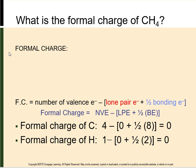The formal charge is the electrostatic charge that would reside on an atom in a molecule or polyatomic ion if all bonding electrons are shared equally between pairs of atoms. The formal charge is calculated based on the Lewis structure. We calculate it by taking the number of valence electrons (NVE) minus the sum of the lone pair electrons (LPE), plus half of however many are bonded electrons.